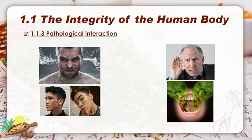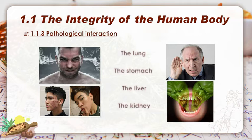Let us play our link game. I have four clinical manifestations: irritability with red complexion and red eyes, acne on the face, loss of hearing in older people, and halitosis. According to the theory of TCM, they may relate to causes from the lung, the stomach, the liver, or the kidney. Can you make the link?